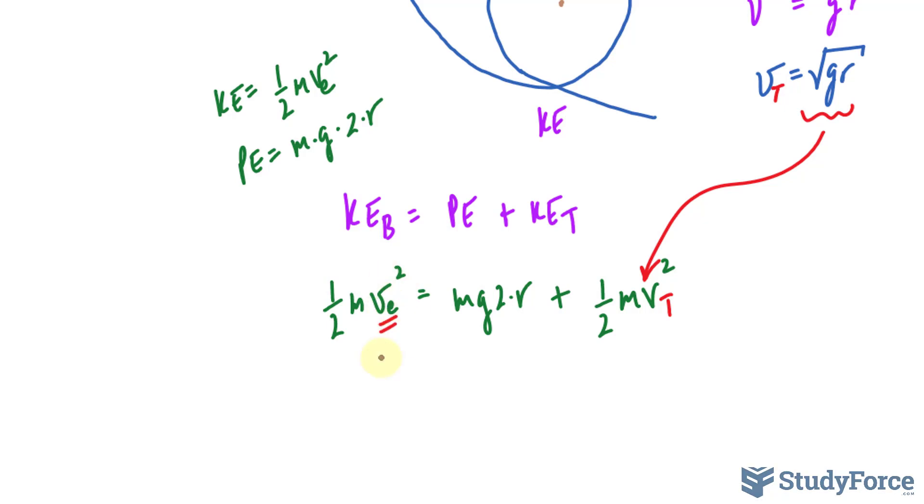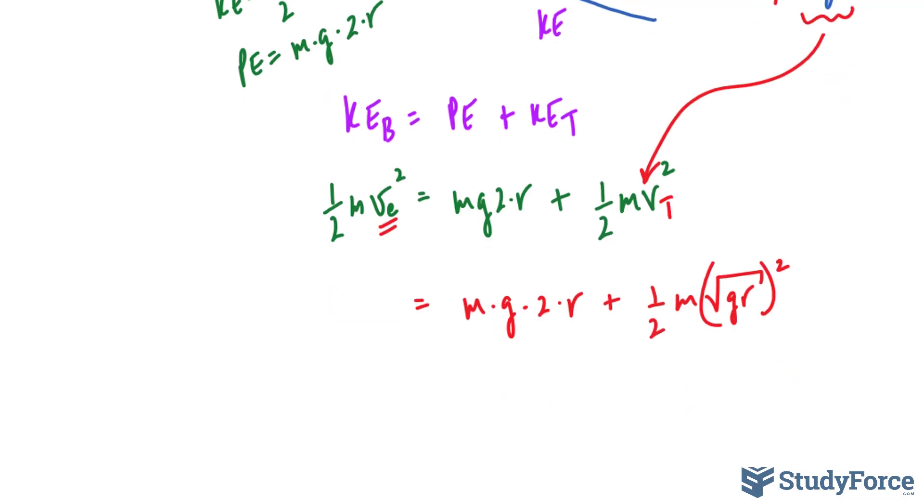All right. From here, you can start to see that we can solve for VE and get the answer. Let's go ahead and solve for VE. We have the mass times gravity times two times r, plus half the mass of the airplane, times the velocity, so the square root of gr raised to the power of two, the square root and the power of two will cancel each other out, leaving us only with gr. And we will divide both sides by these two factors, half m. So dividing both sides by half m gives us on the left side the entry speed raised to the power of two.